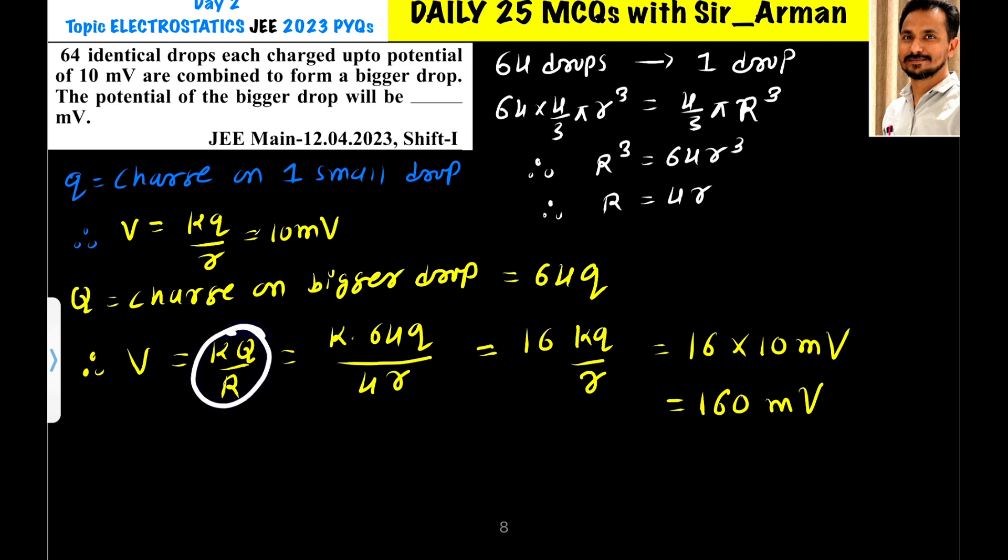So k times what is the value of q? Capital Q is 64 into q, so we have 64 into q. And what is the value of r? It is 4 into r. If you solve this, 64 divided by 4 is 16, so it is 16 k q by r. What is k q by r? It is 10 millivolt. So it is 16 into 10 millivolts, which is 160 millivolts.